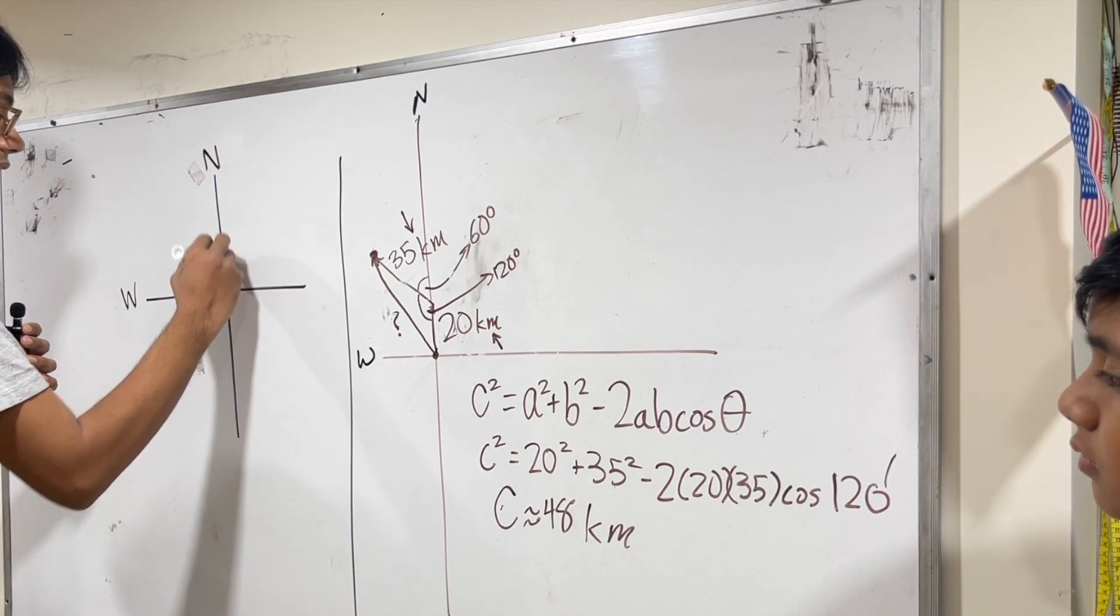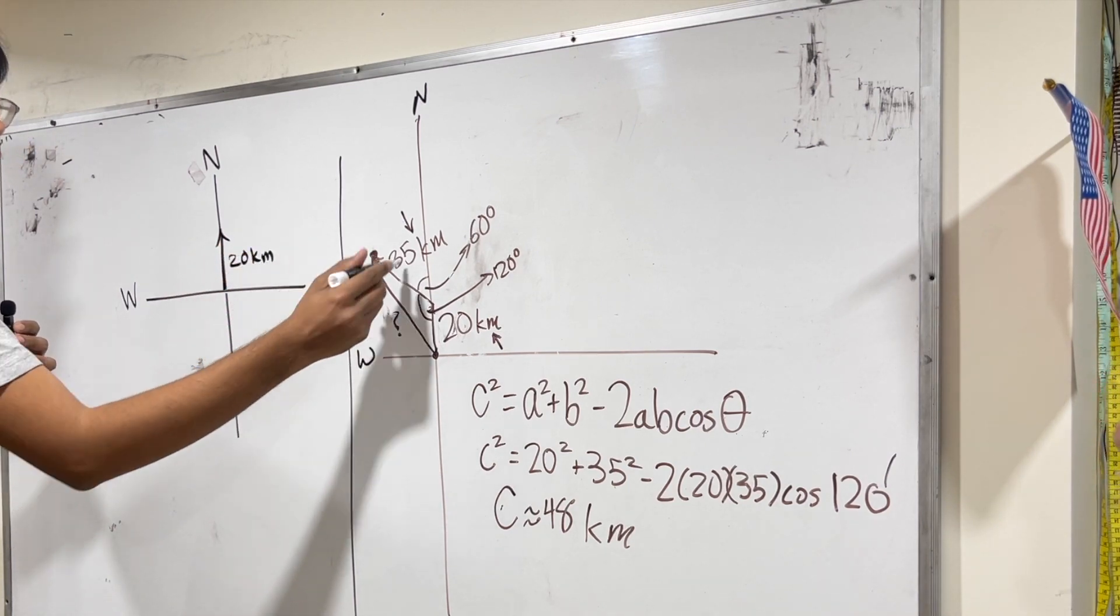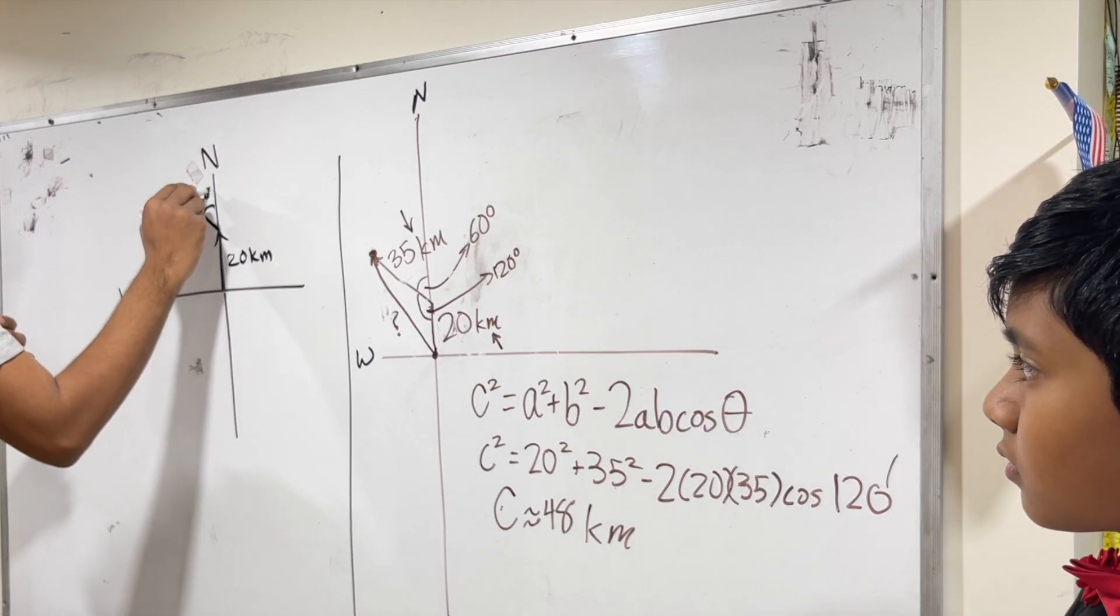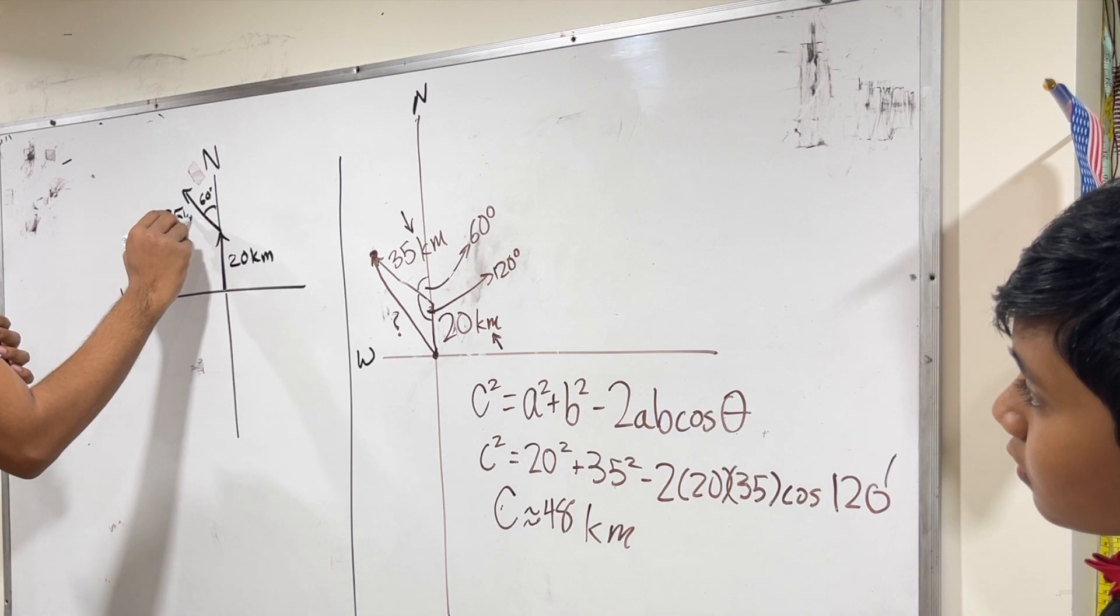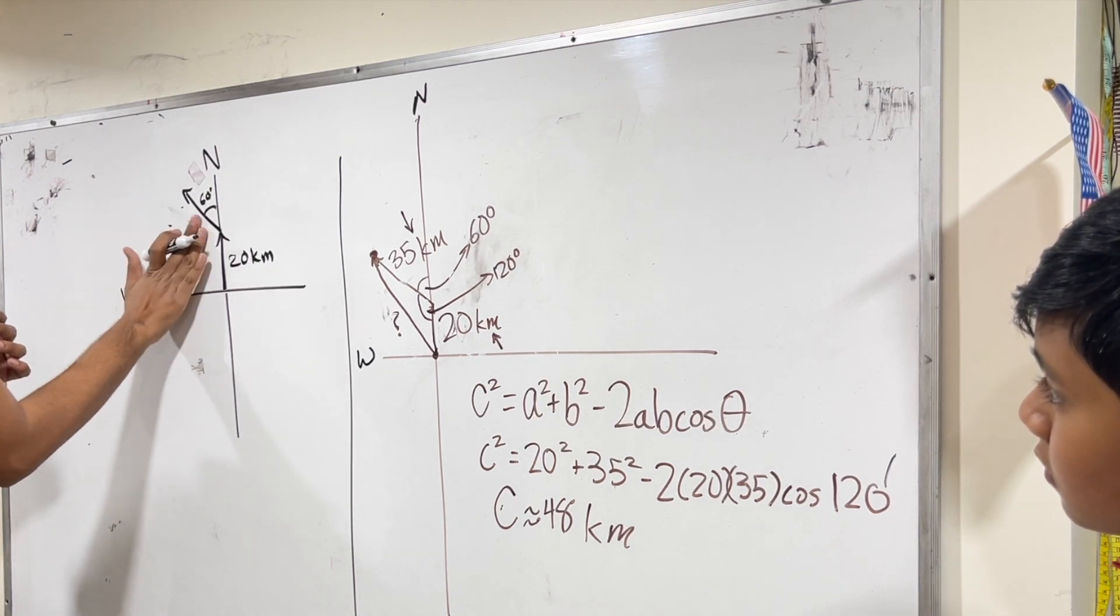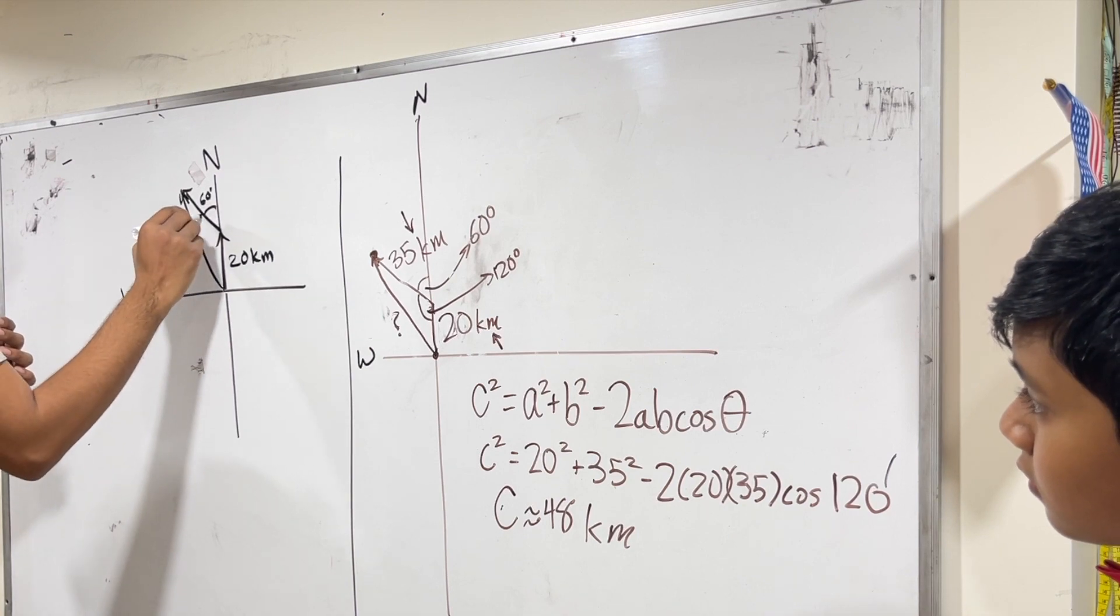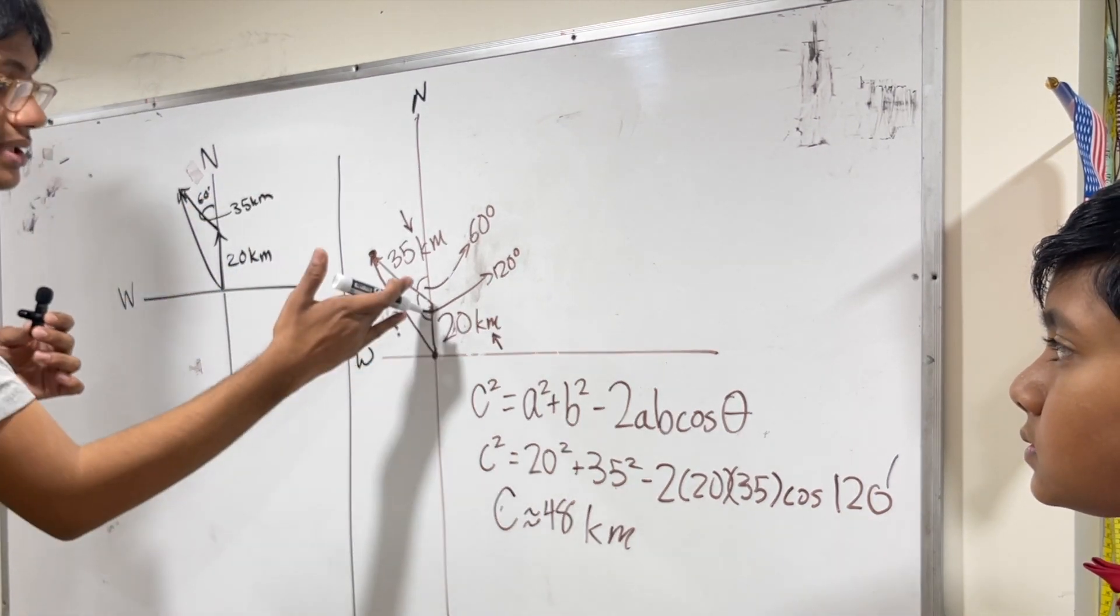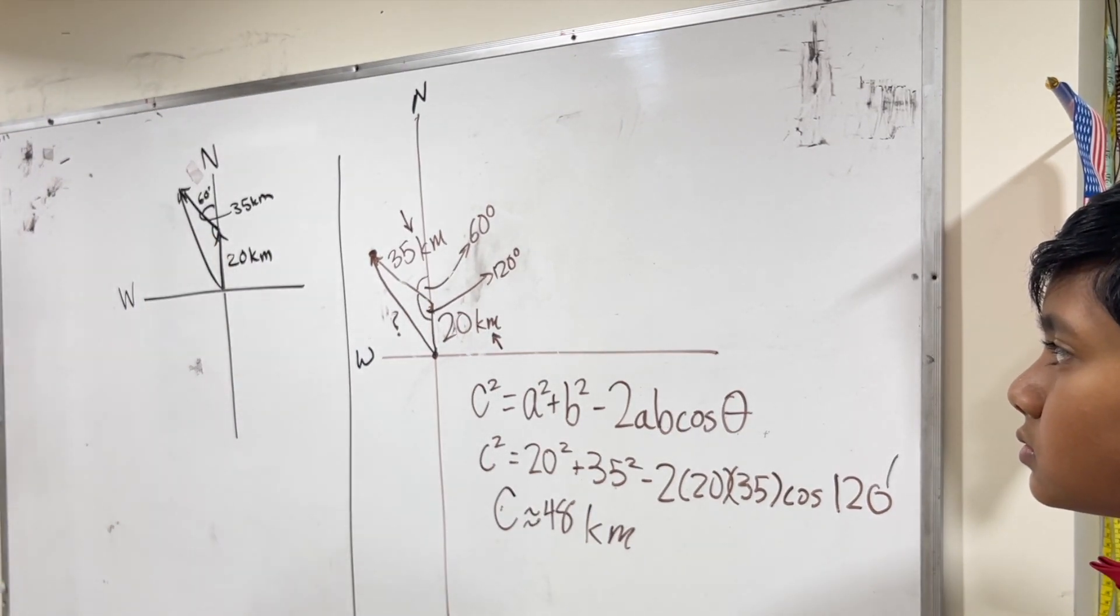And we have 20 kilometers north and 35 kilometers 60 degrees west of north. And this is 35 kilometers. And our goal is to find the magnitude of this resultant. Okay. So now, in the law of cosines, we took this 120 degree angle. But we cannot do that for the law of parallelograms.